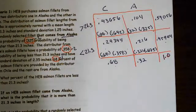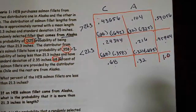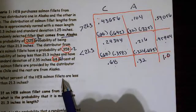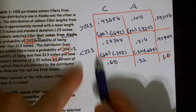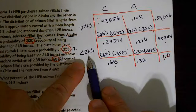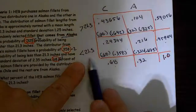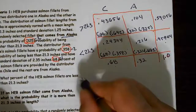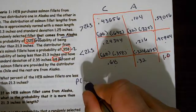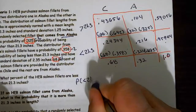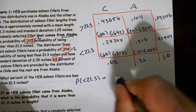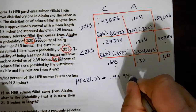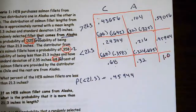So now I've built my table. What percent of the HEB fillets are less than 21.3 inches? All I care about is not where they're coming from — I just care about them being less than 21.3. That's this value right here. So the probability that they are less than 21.3 equals 0.45944.